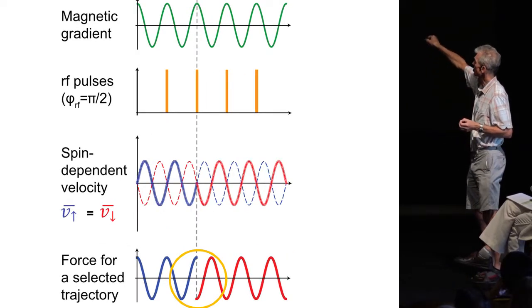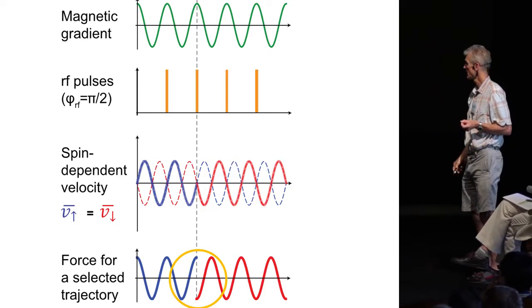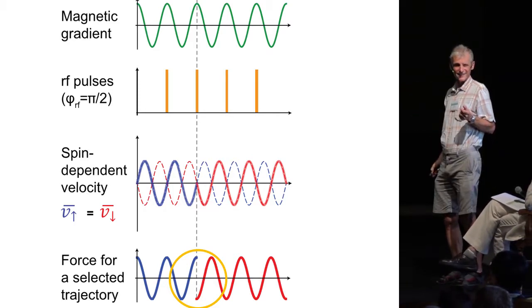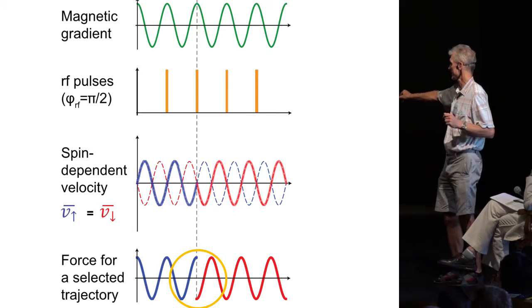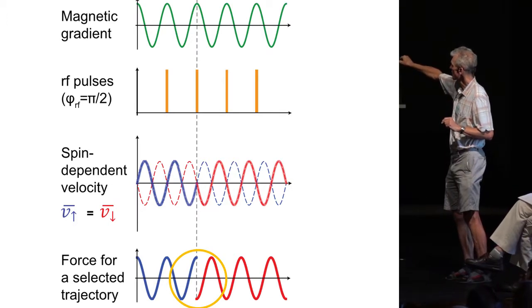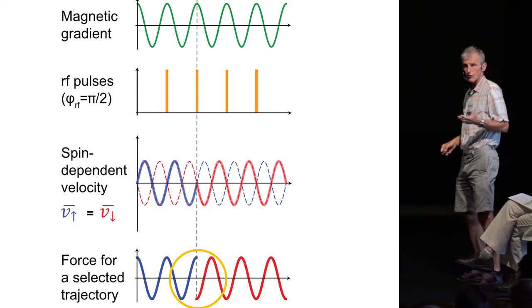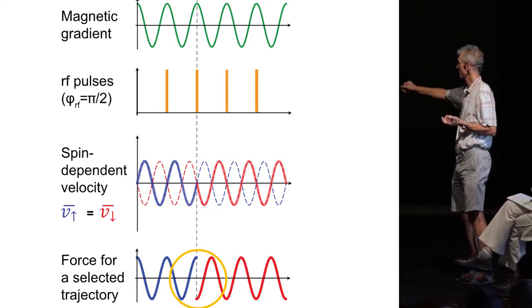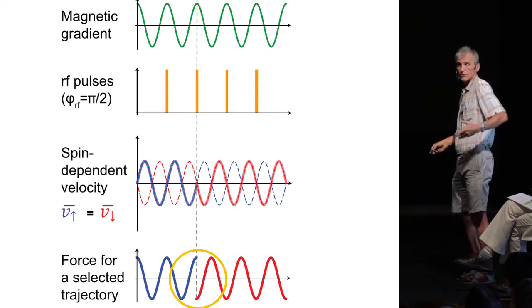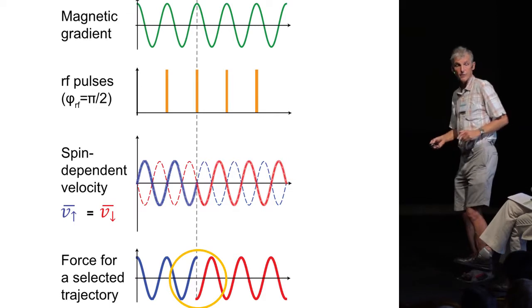Here I show you the other example where the delta function pulses are shifted by 90 degrees. And now if you look at that you would say no there isn't really an extra kick in this force for selected trajectory. And indeed if you also look at the spin dependent velocity the spin dependent velocity for both states which are coupled spin up and spin down is the same.